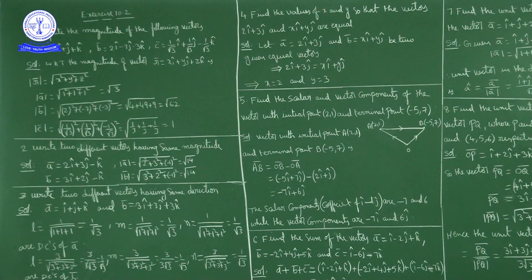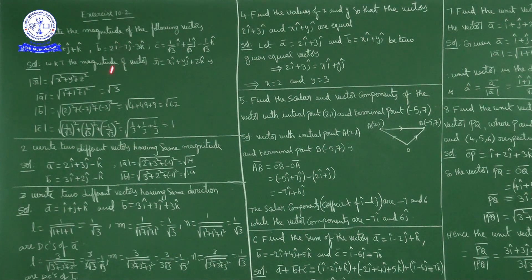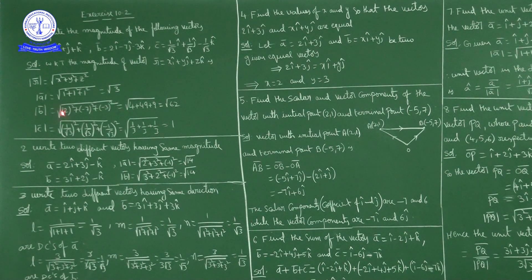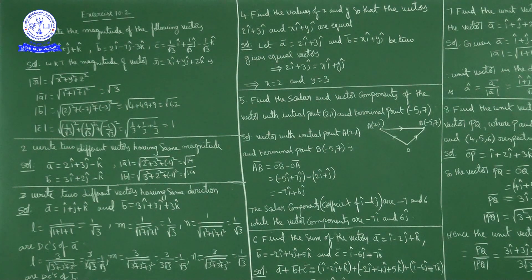Magnitude of b̅: b̅ = 2î − 7ĵ − 3k̂, so magnitude of b̅ = √(2² + (−7)² + (−3)²) = √(4 + 49 + 9) = √62. Magnitude of b̅ is √62.